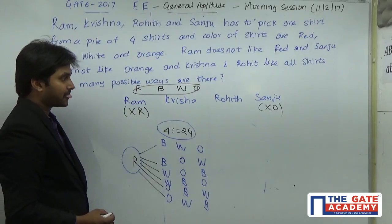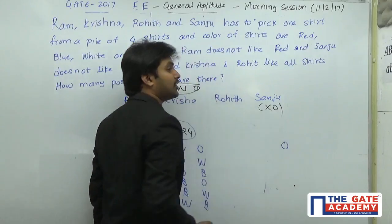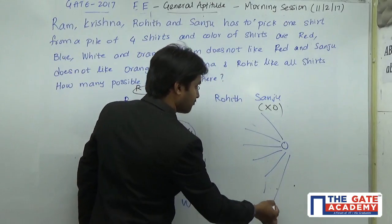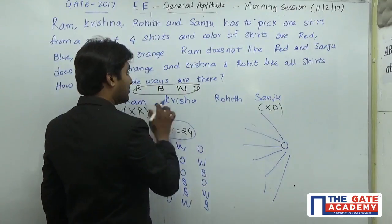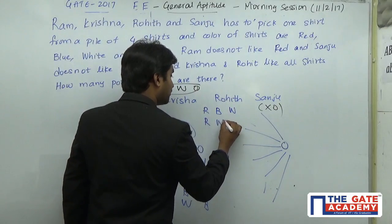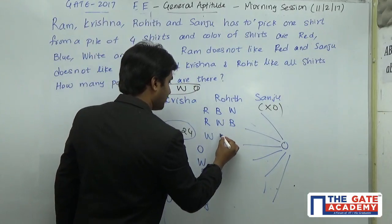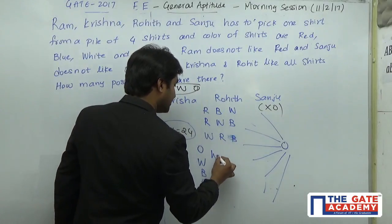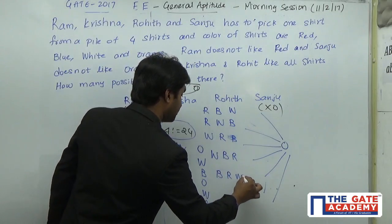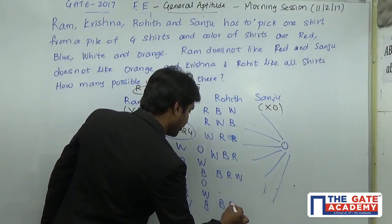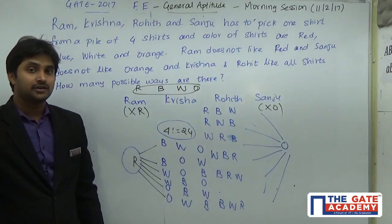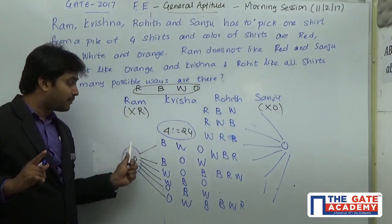Now I consider the cases where Sanju takes orange. There are also six possibilities here. The arrangements for Ram, Krishna, and Rohit when Sanju takes orange are: Red-Blue-White, Red-White-Blue; White-Blue-Red, White-Red-Blue; Blue-Red-White, Blue-White-Red. So there are six possibilities where Sanju takes the orange shirt, and Ram does not necessarily take red in these cases.